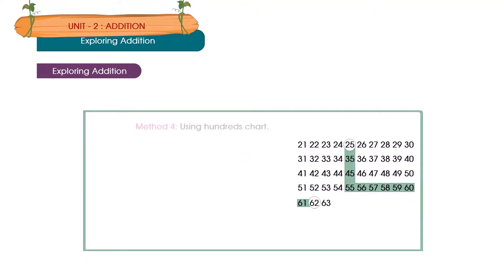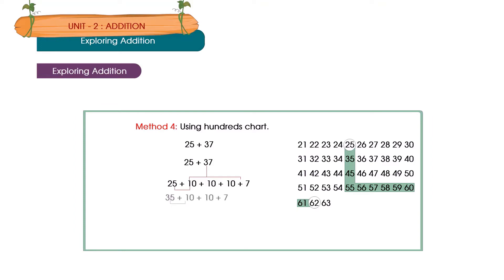Method 4: Using a hundreds chart. 25 plus 37. We count: 25 plus 10 plus 10 plus 10 plus 7. 35 plus 10 plus 10 plus 7. 45 plus 10 plus 7. 55 plus 7 is equal to 62.